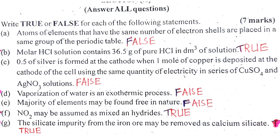Number D: Vaporization of water is an exothermic process. Vaporization is an exothermic process.